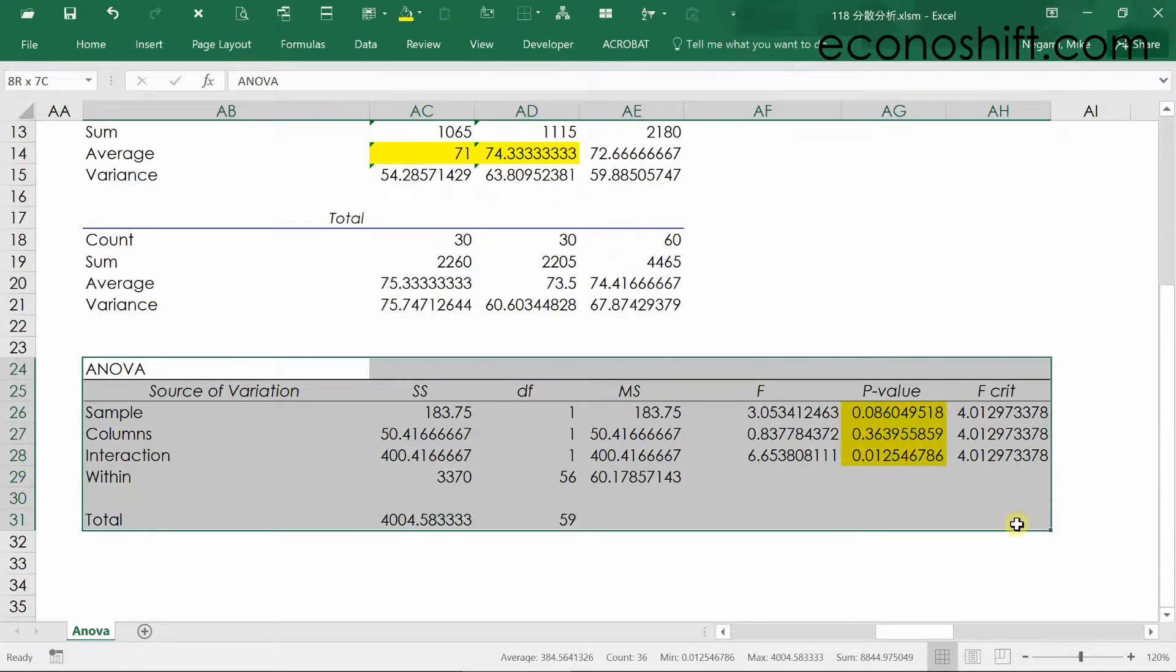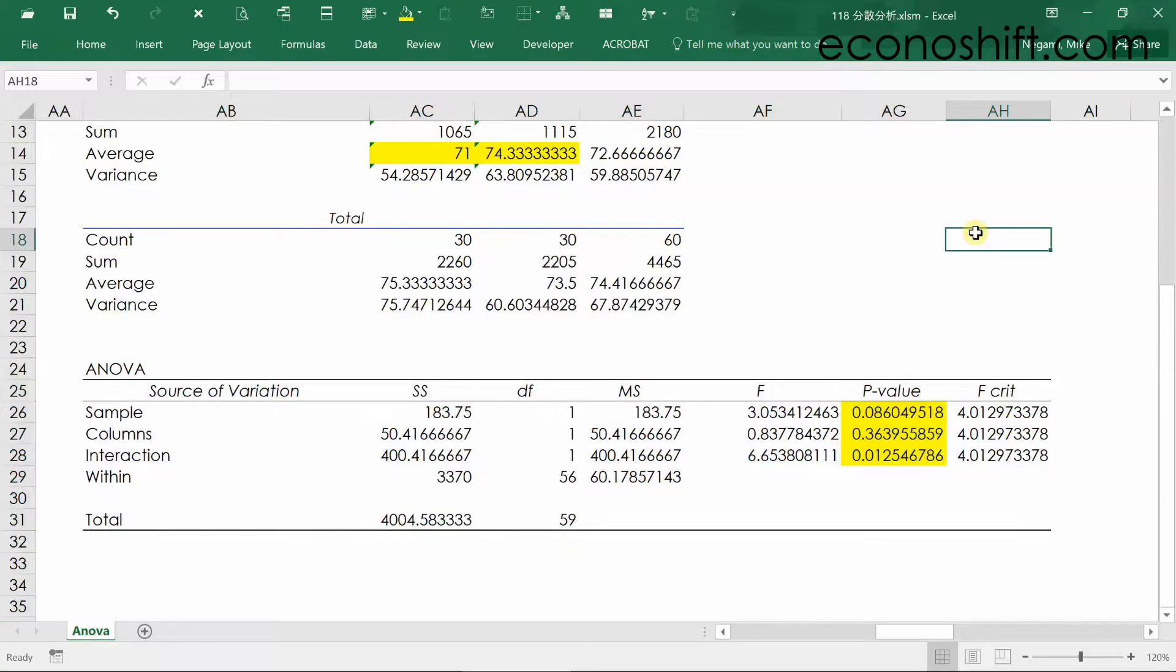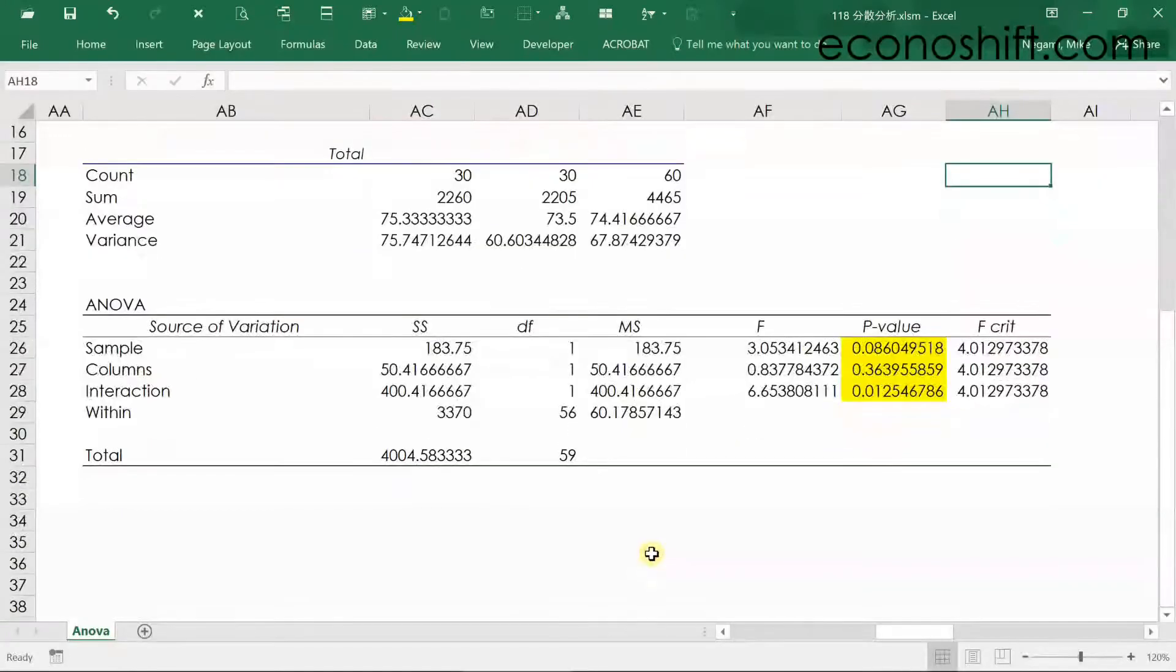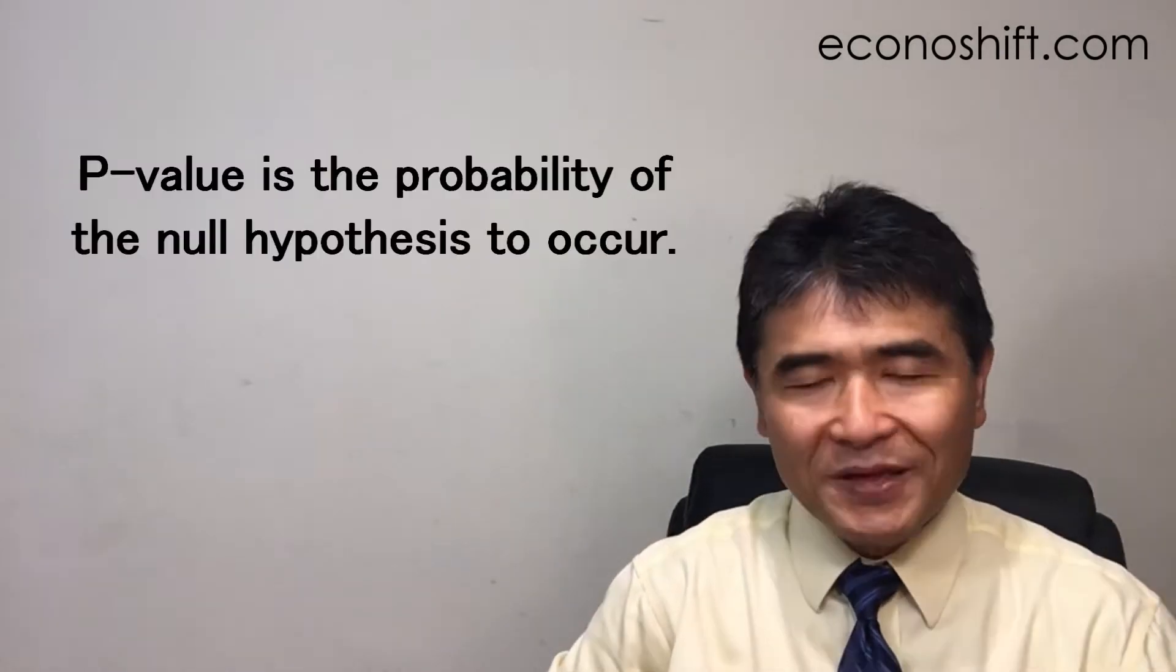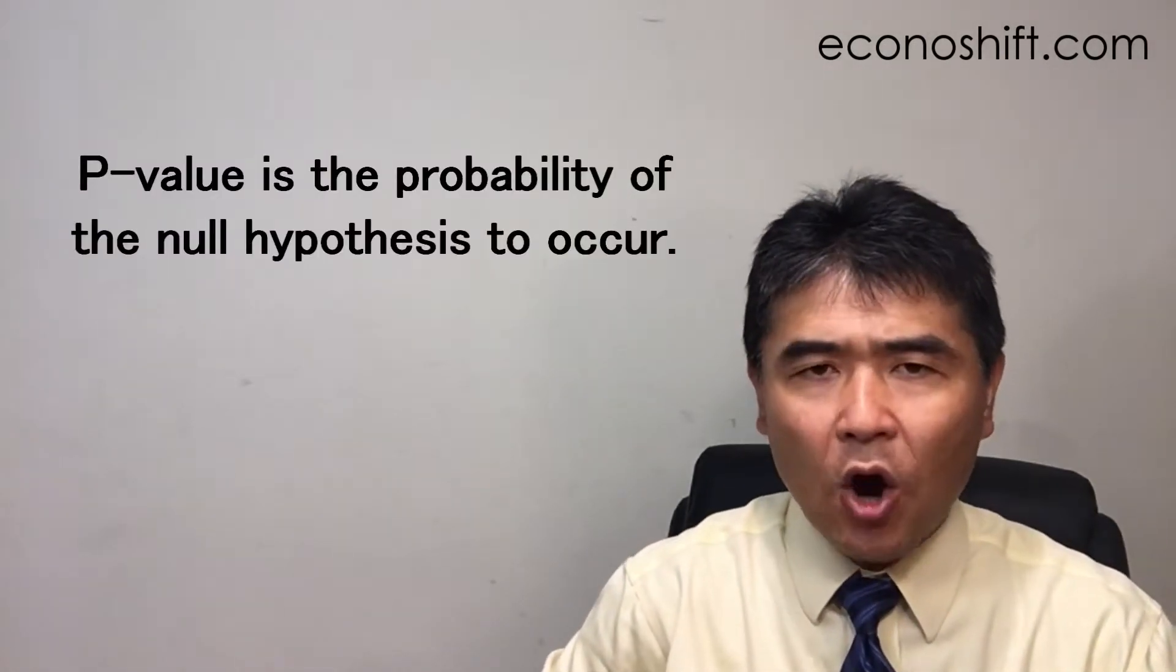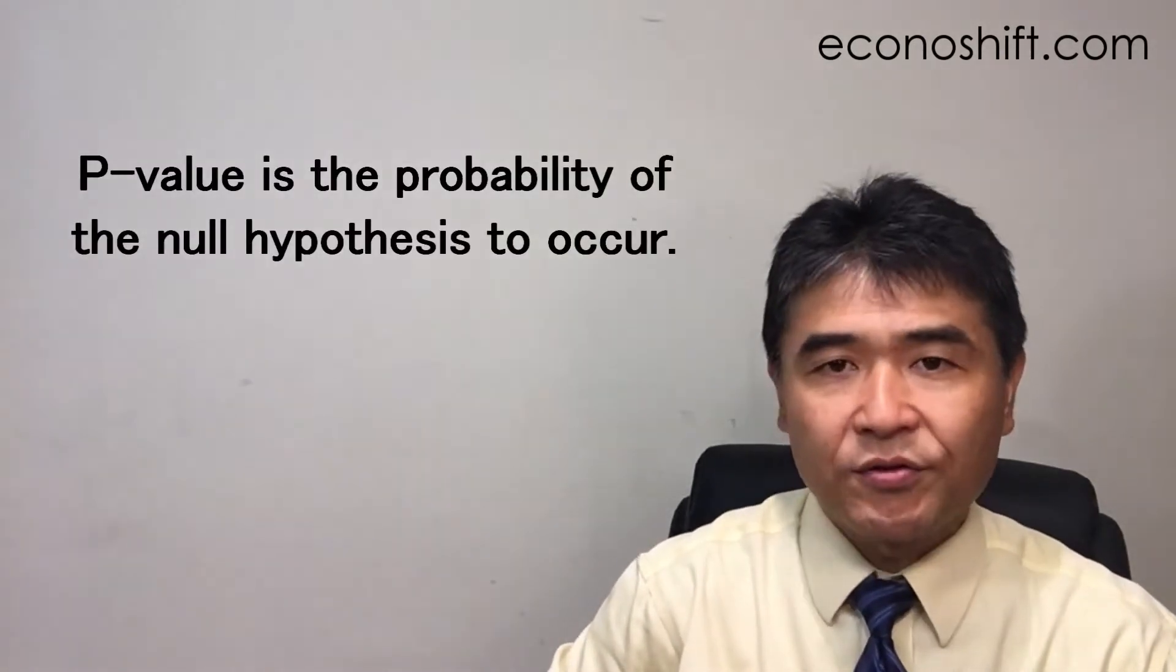It's called the ANOVA table. Of course, it's good if you understand all numbers in the table, but at least understand this p-value well. I talked about this p-value in the video about regression analysis. In more detail, p-value is probability of the null hypothesis to occur.